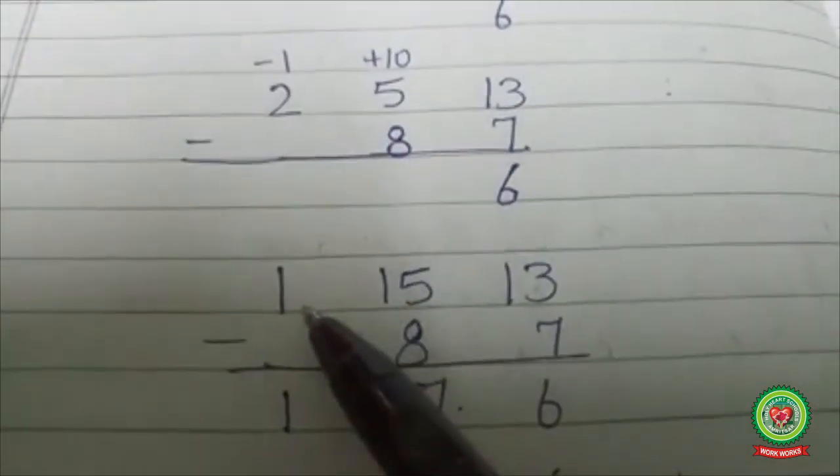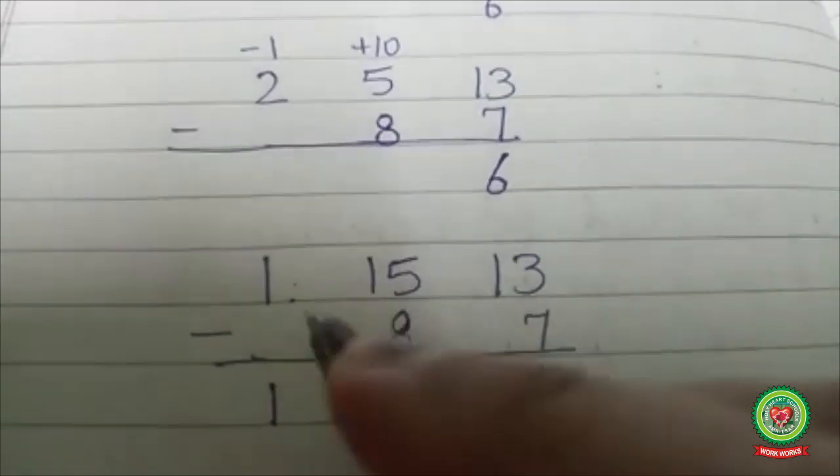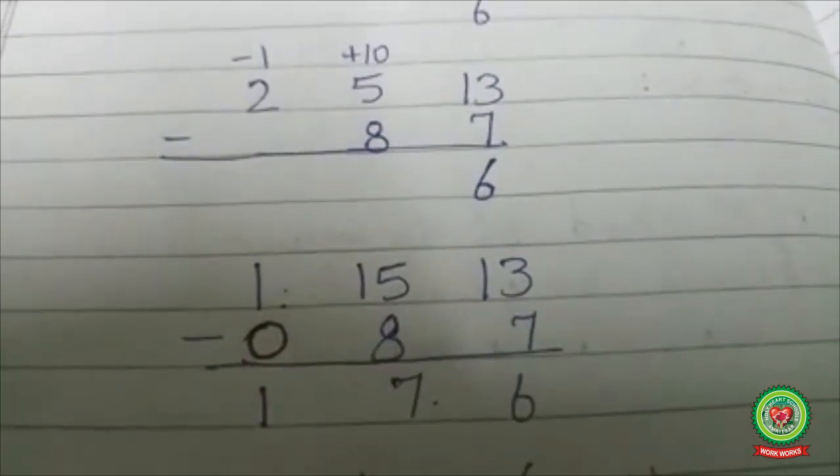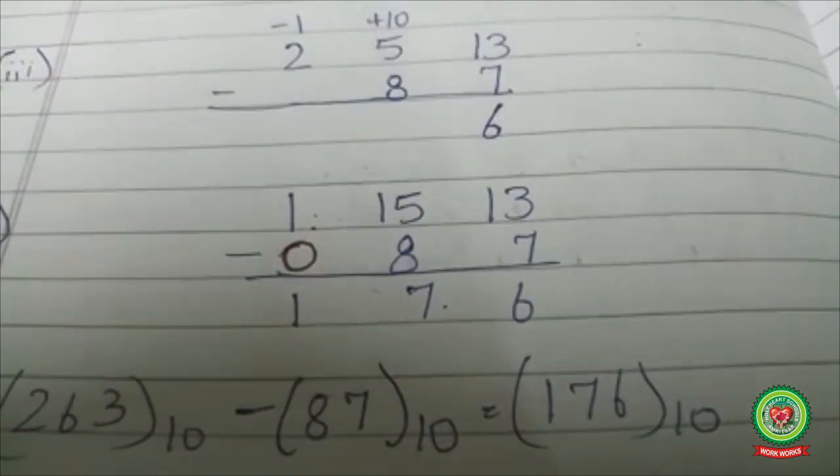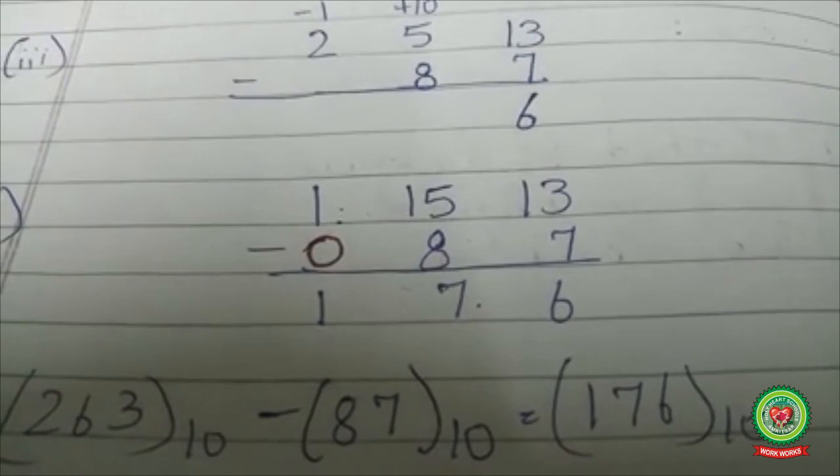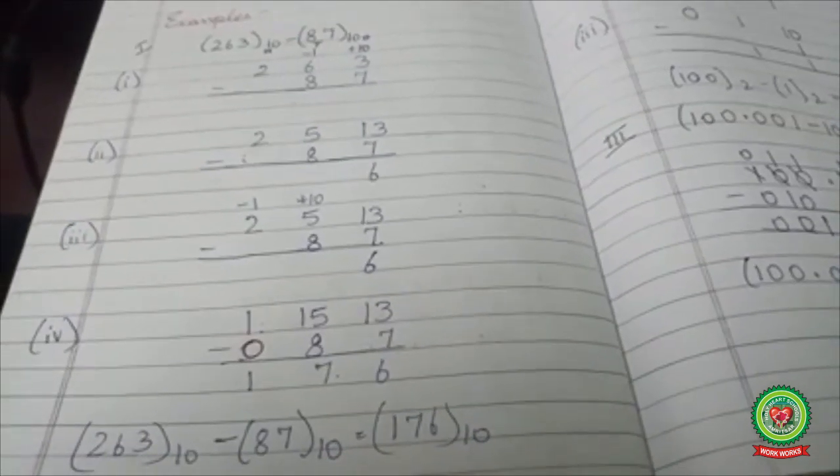So 15 minus 8 is 7, and here 2 minus 1 will become 1, and 1 here, there is no number, it means there is 0. So 1 minus 0 is 1. So the answer is 263 minus 87 is equal to 176. This was the explanation of decimal subtraction using the method of borrow.